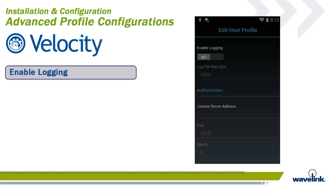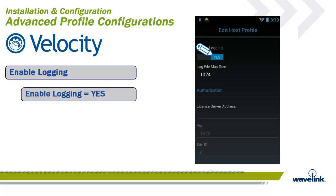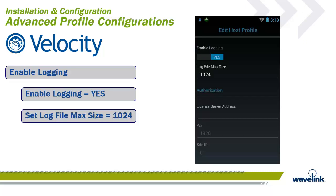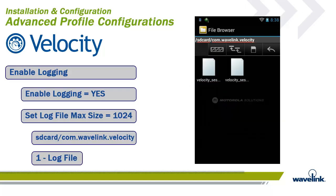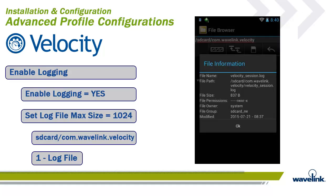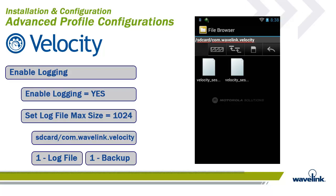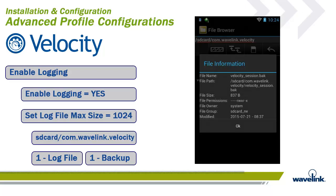The Enable Logging toggle allows information to be gathered about a Velocity client connection. By default, Enable Logging is set to No, which is considered best practice. When detailed information about the session is needed, log files can be accumulated by swiping the Enable Logging button to Yes and setting the Log File Max Size. By default, the file size is 1024 bytes or 1k. Files are stored on the SD card under the file name com.wavelink.velocity. All connection information is logged to a file called velocity-session.log. When the max file size is exceeded, data is copied to velocity-session.bak, the original log is wiped, and new data begins flowing into the current file.